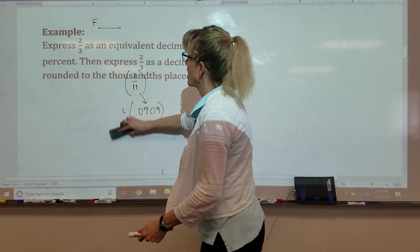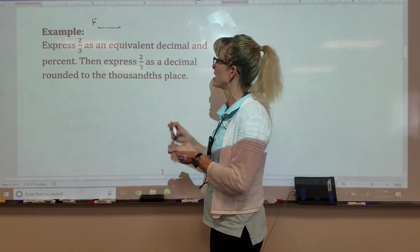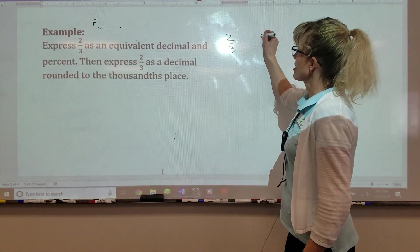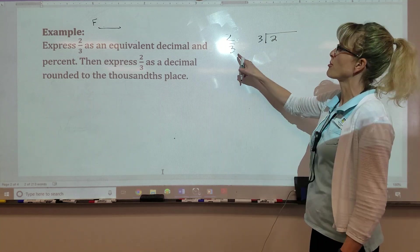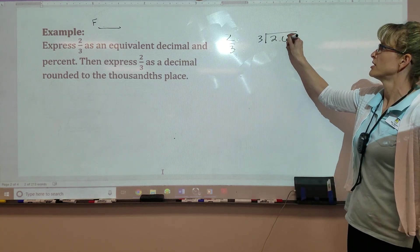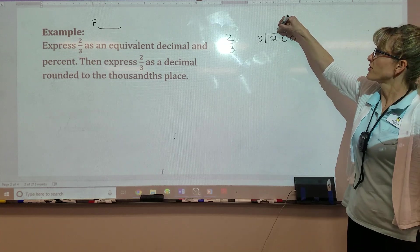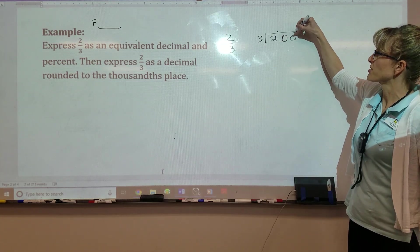Okay, so two-thirds. We're going to review how to write this as a decimal and a percent. So two divided by three. That means we're going to go three into two. Remember, the denominator goes into the numerator. Three won't go into two.